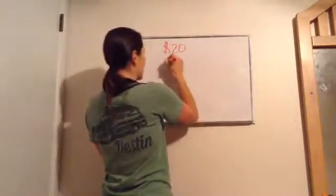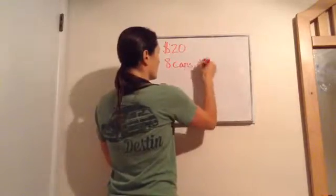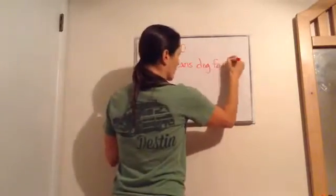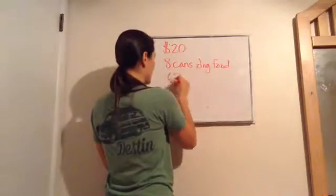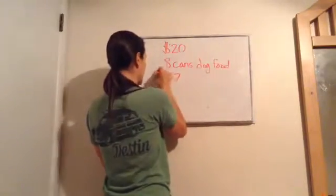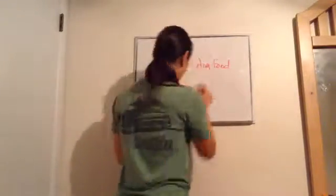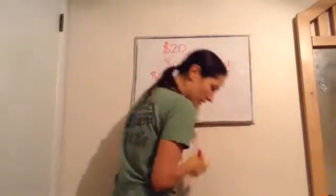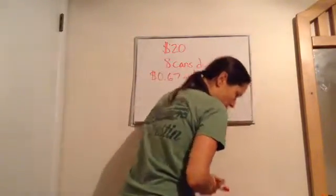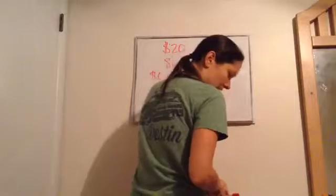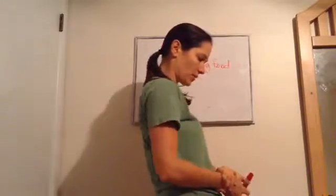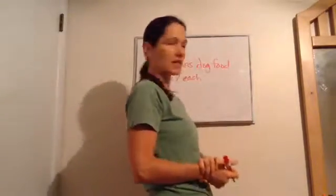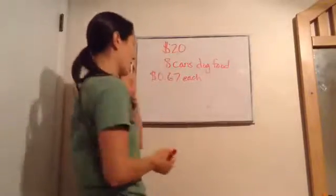She bought eight cans of dog food, and they were 67 cents a piece each. Then it says: if she bought eight cans of dog food for 67 cents per can, how much money did she have left?